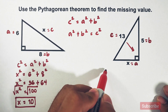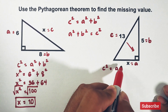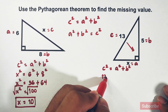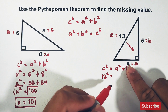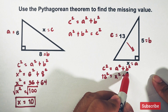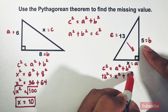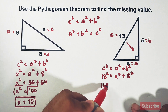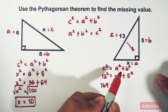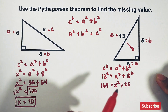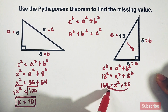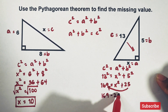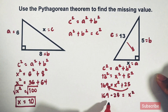Using the formula c² = a² + b², we substitute: 13² = x² + 5². Since 13² = 169 and 5² = 25, we have 169 = x² + 25. Transposing 25 to the other side, it becomes 169 − 25 = x².